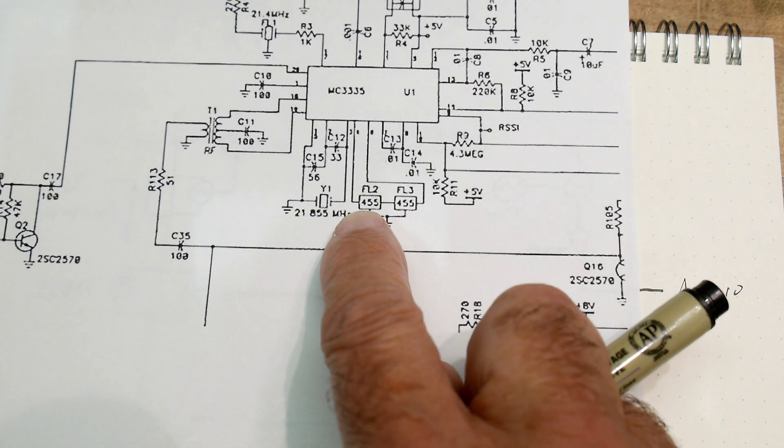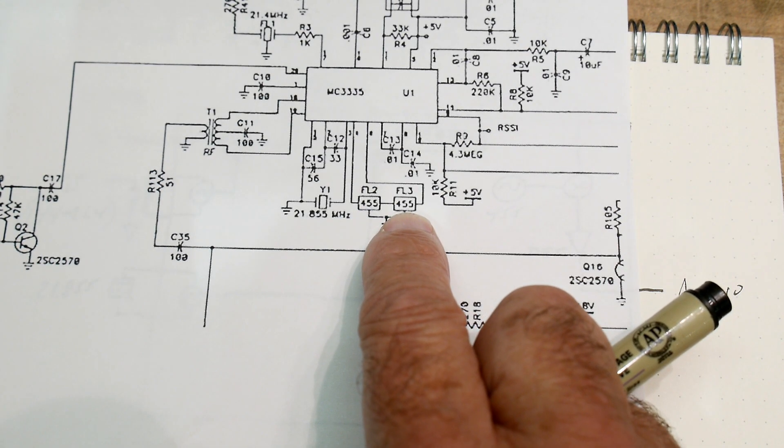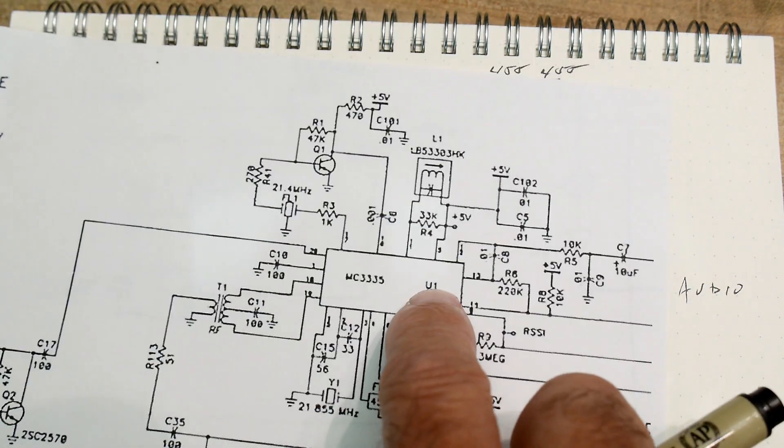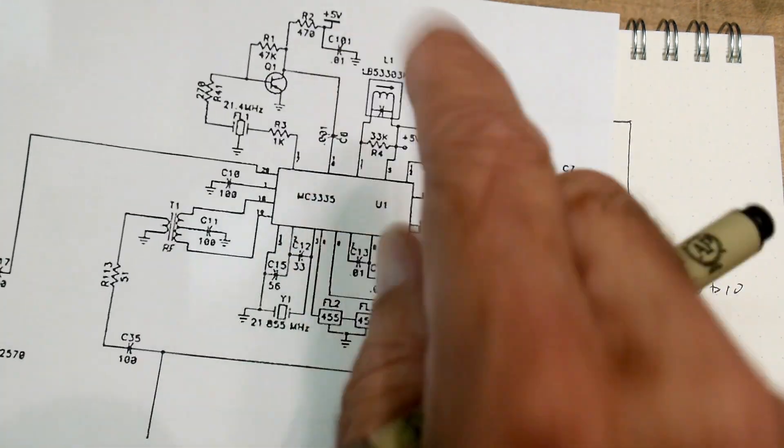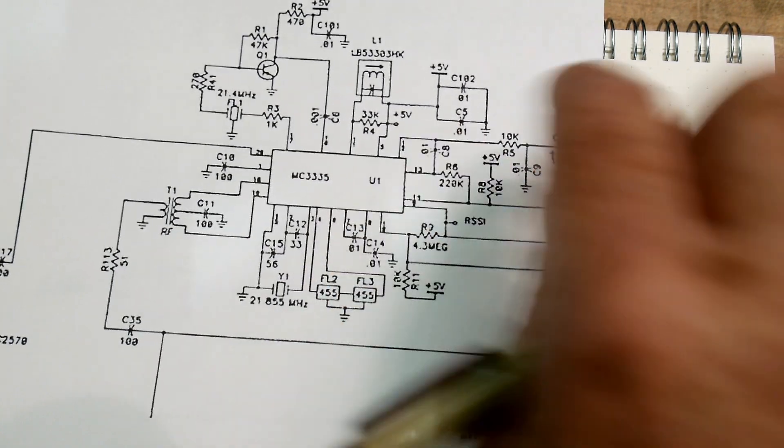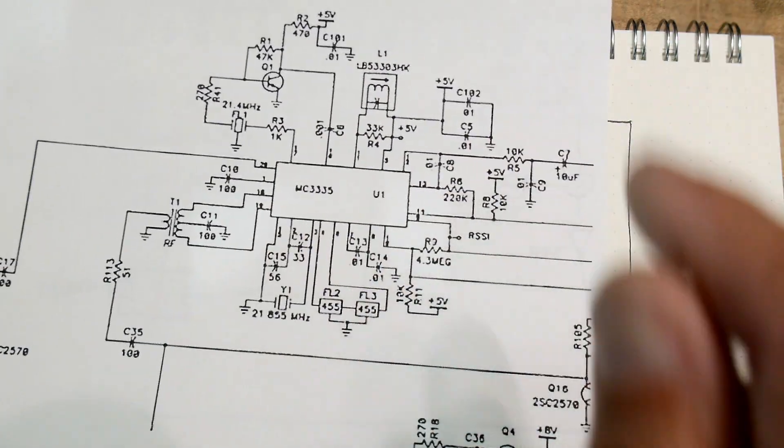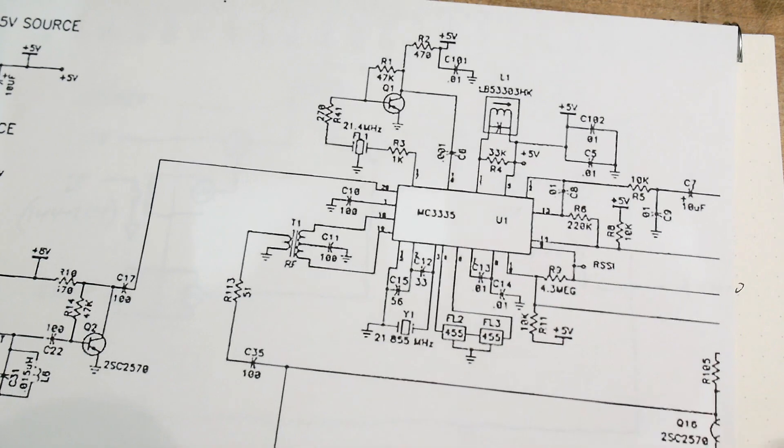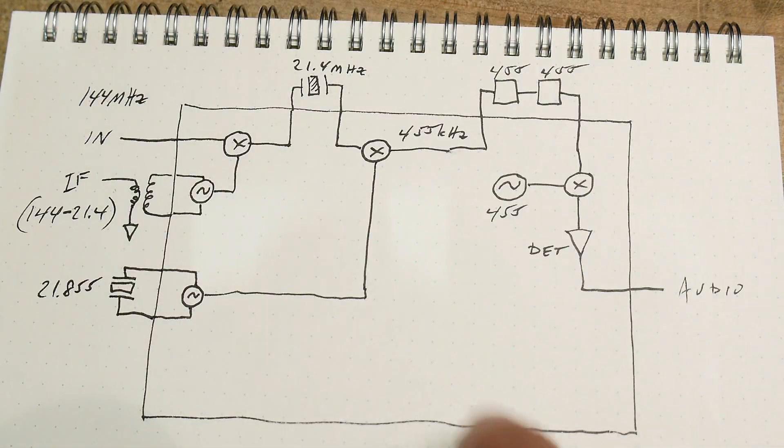This is our 21.4 megahertz crystal. It also has some buffering associated with it, so that's a little bit interesting. And then this is the 21.855 megahertz crystal down here. Here are the two filters 455, 455, and then there's also another filter in there, this can that I didn't show on my simplistic drawing, and then there's some other filtering and stuff for the part, and it finally goes out as audio. So yeah, it's a little bit more complicated than I drew, but this is what's going on.